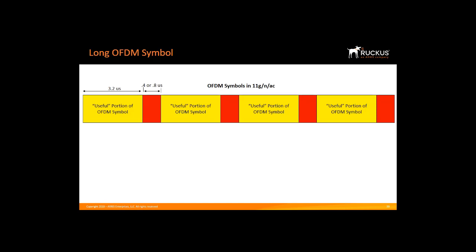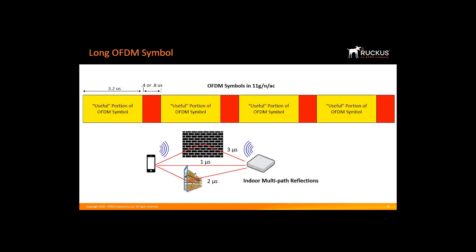Why do we need the guard interval? Why is it 0.4 or 0.8 microseconds and not 0.1 microsecond? When wireless transmits a signal, it reaches the destination receiver directly, and it also gets reflected off walls, ceilings, and other obstacles before reaching the receiver. The reflections are called multipath. How much multipath we can tolerate is dictated by how wide the red portion is.